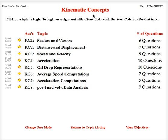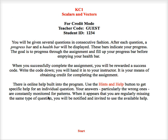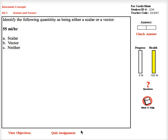The eight different assignments that we see for the Kinematic Concepts topic are listed right here. I'm going to try the first one. So when I click on that, I come to the assignment screen for the Scalars and Vectors assignment. I can look this information over, or even overlook it, and then I can click the Start button to begin.